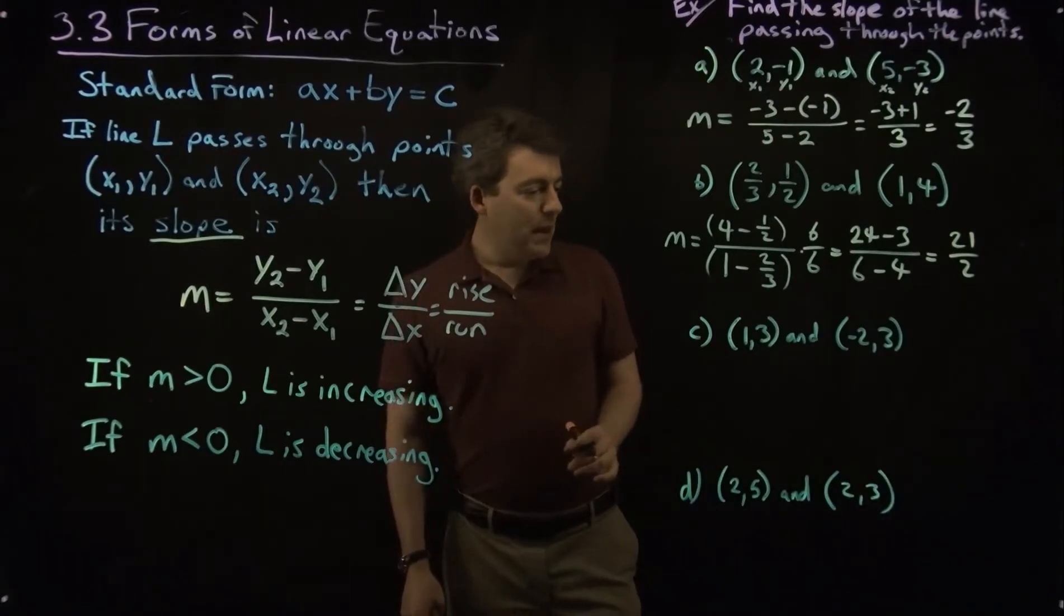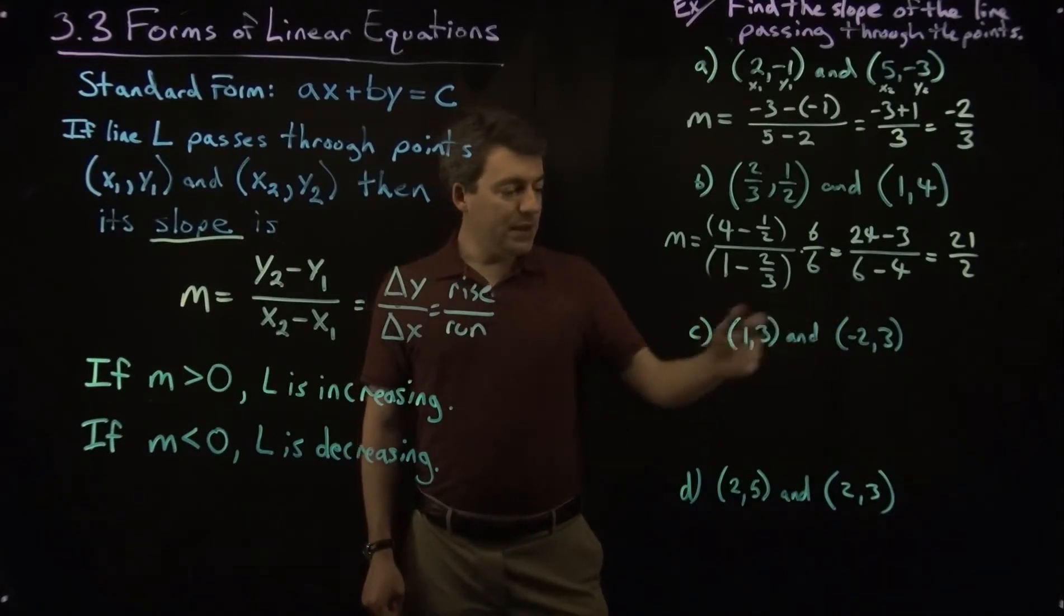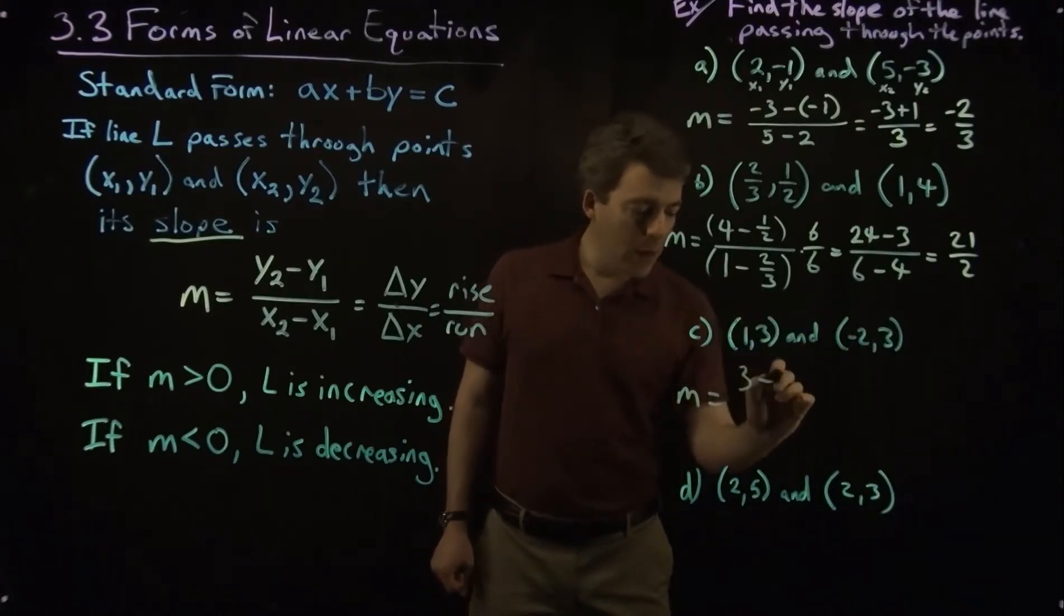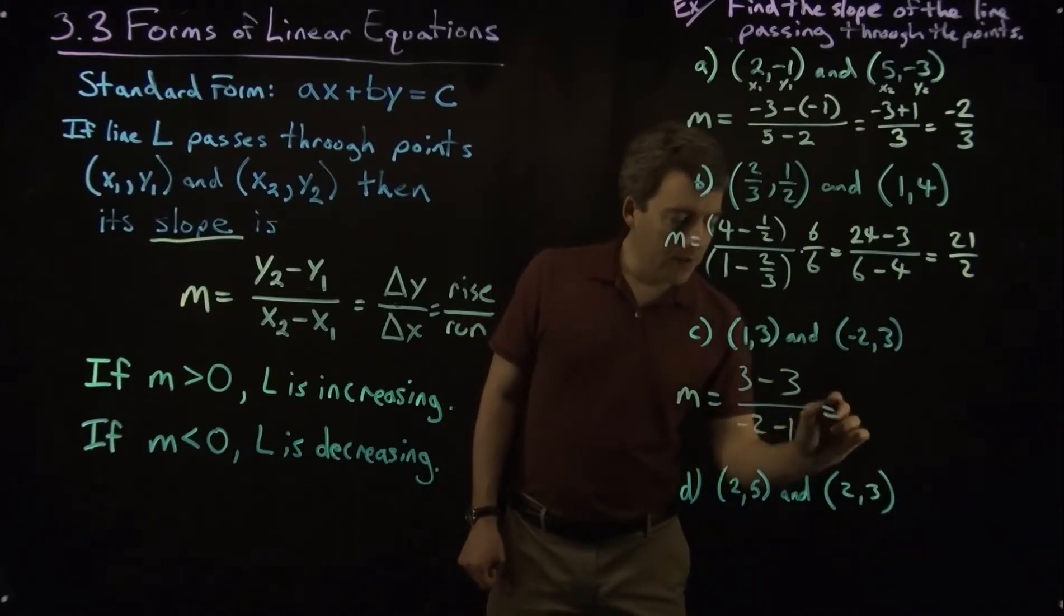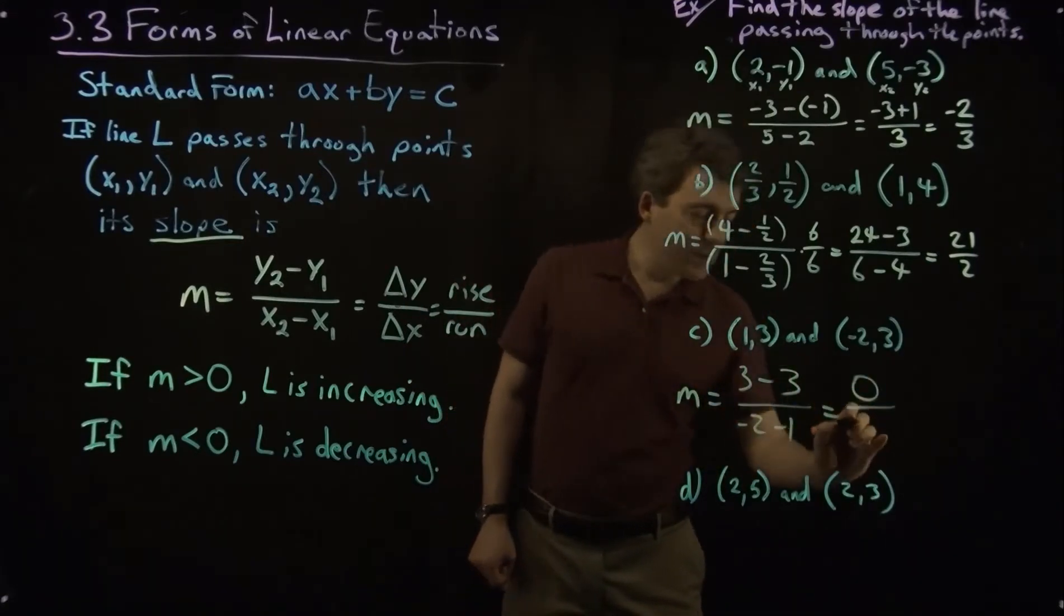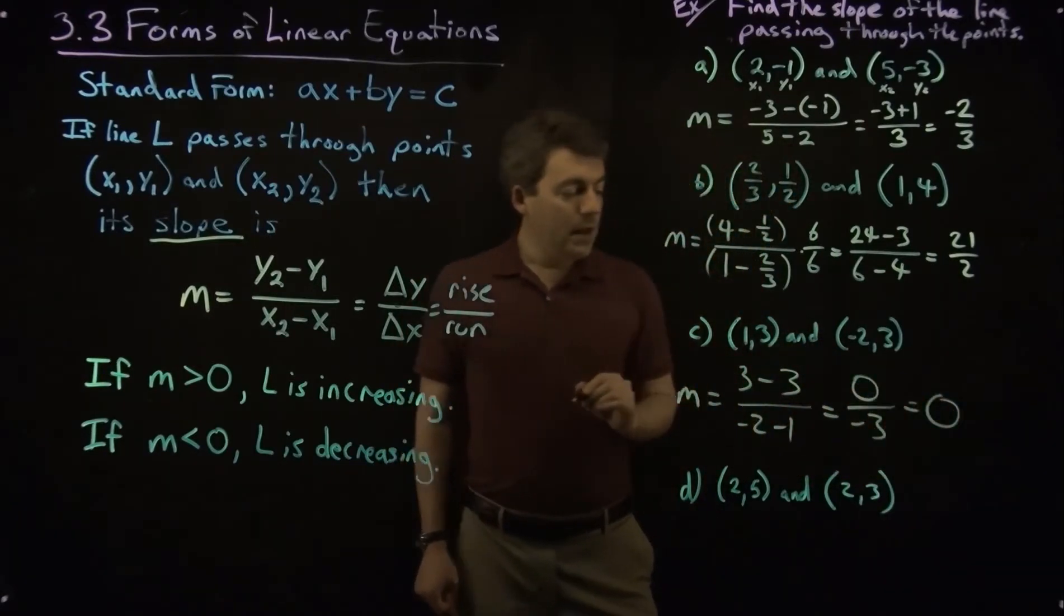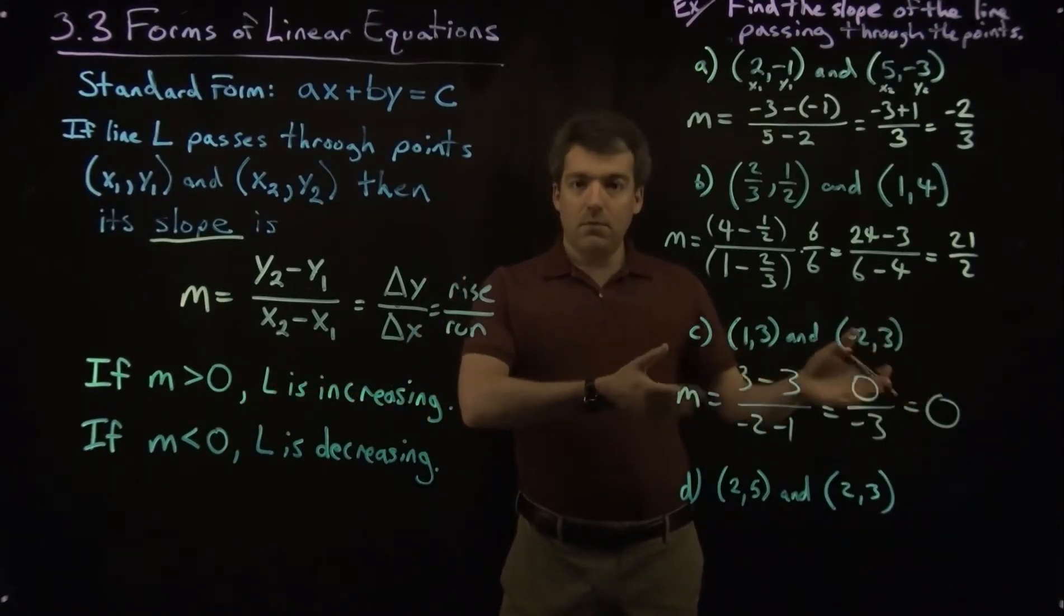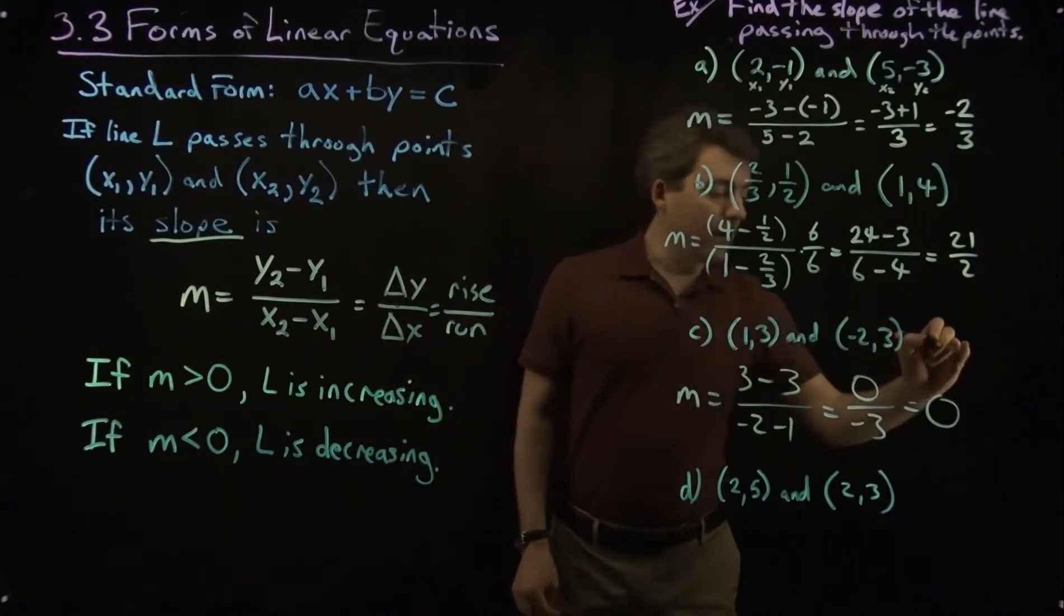All right. Let's look at these second two examples. If you'd like to, pause the video, and you can go ahead and calculate these yourself. But let's go through here. So m equals, so y2 is 3 minus y1, also 3, divided by negative 2 minus 1. 3 minus 3 is 0. Negative 2 minus 3 is negative 3. And 0 over any number is just 0. Now, notice that 0 is neither positive nor negative, and so this line has a slope of 0, and it's not increasing or decreasing. This would be a horizontal line.